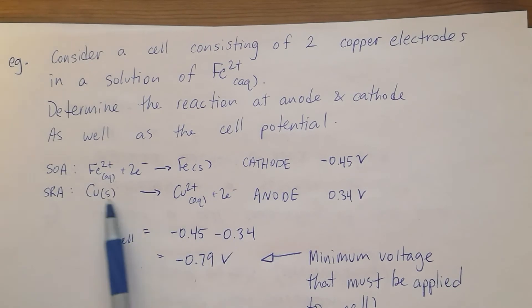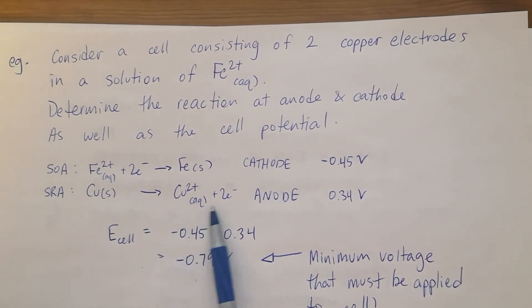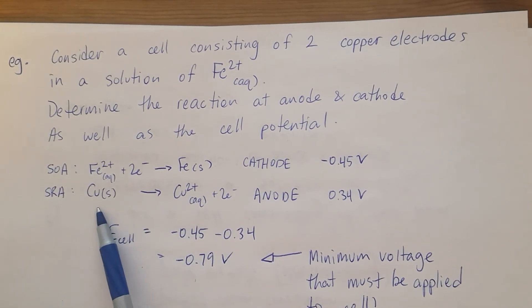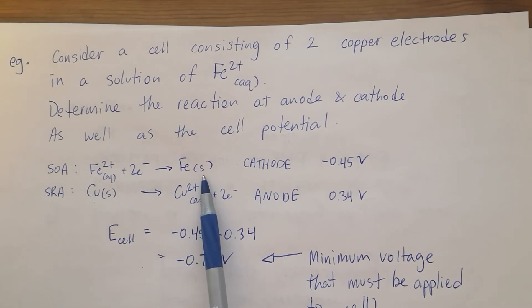The anode is going to oxidate or oxidize. It's going to turn into copper 2 ions and slowly corrode. At the cathode, solid iron will be forming on top of the copper.